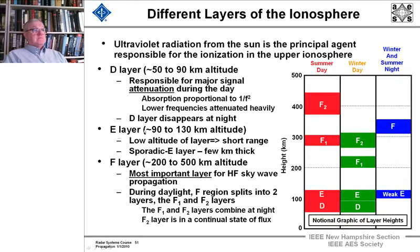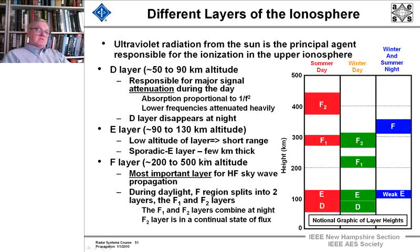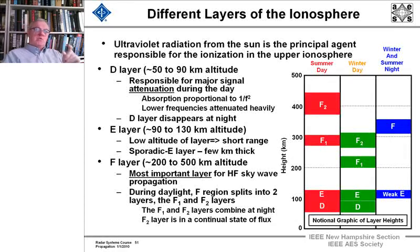The E layer, at 90 to 130 kilometers, is a low-altitude layer that allows transmission and reflection back at short ranges of hundreds of miles. It's sporadic and it comes and goes. If you wanted to communicate from Massachusetts to Pennsylvania at 14 megahertz using this layer, you might have to listen for hours to get even a minute's worth of usable time. That's why it's called sporadic E.